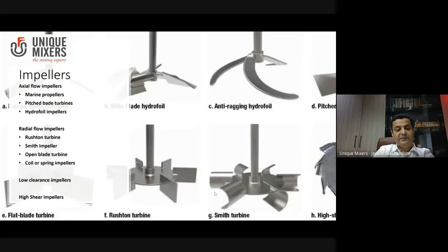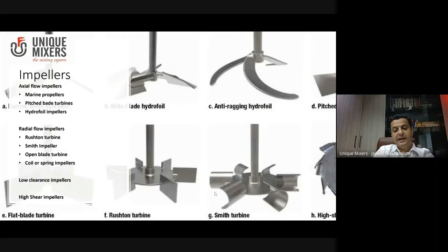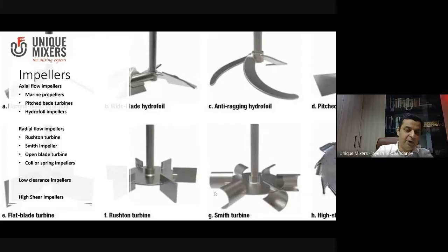For axial flow impellers you have the marine propeller, pitch blade turbines, and hydrofoil turbines. For radial flow impellers there are the Rushton turbine, Smith turbine, open blade turbines, and coil and spring impellers. For close clearance you have the helical agitator and the anchor agitator. Then you have high shear impellers such as the sawtooth, high speed disperser, or stator-rotor. Broadly, the primary classifications are axial flow, radial flow, close clearance, and high shear impellers.